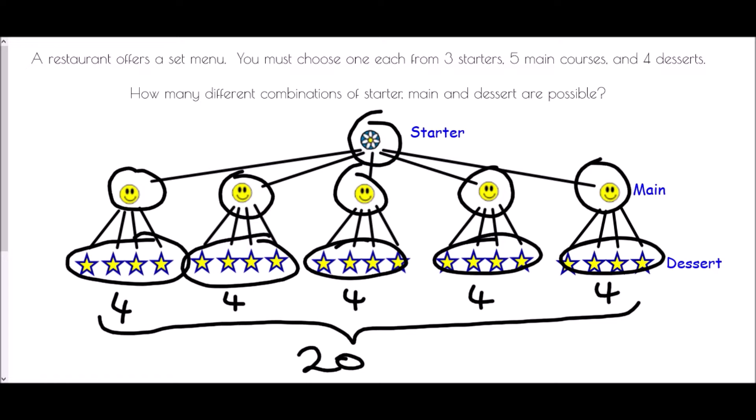But at this point that is only dealing with our first choice of one starter. We had three different starters we could have chosen. Therefore this number of twenty combinations actually needs to be multiplied by three, giving us a total of sixty combinations.